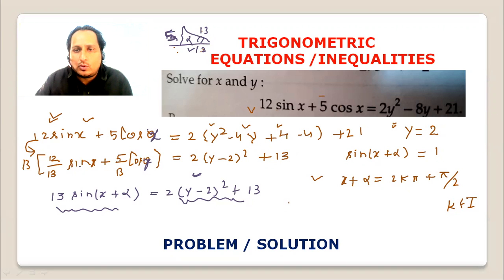So x equals 2K pi plus pi by 2 minus alpha, where K belongs to integers.